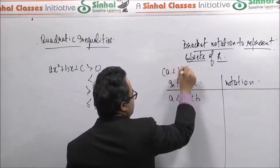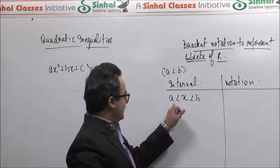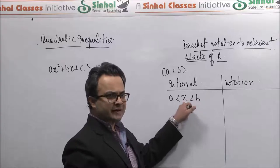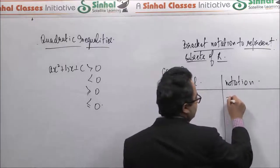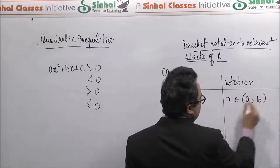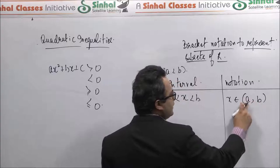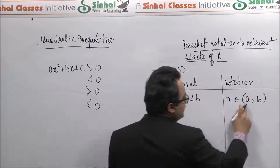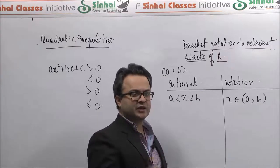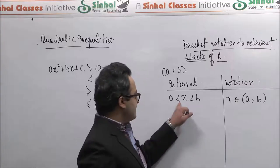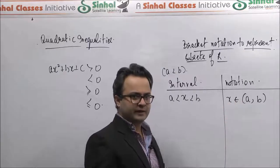Throughout this discussion we will assume that a is a value less than b. We can talk about an interval x lying between a and b — this is the set of values of x which are greater than a but simultaneously less than b. This set can be represented in bracket notation as x belongs to round brackets a comma b. Here a comma b denotes the endpoints of the interval. The usage of round brackets indicates that these endpoints are not included in the set — when x strictly lies between a and b, we say x belongs to round brackets a comma b.